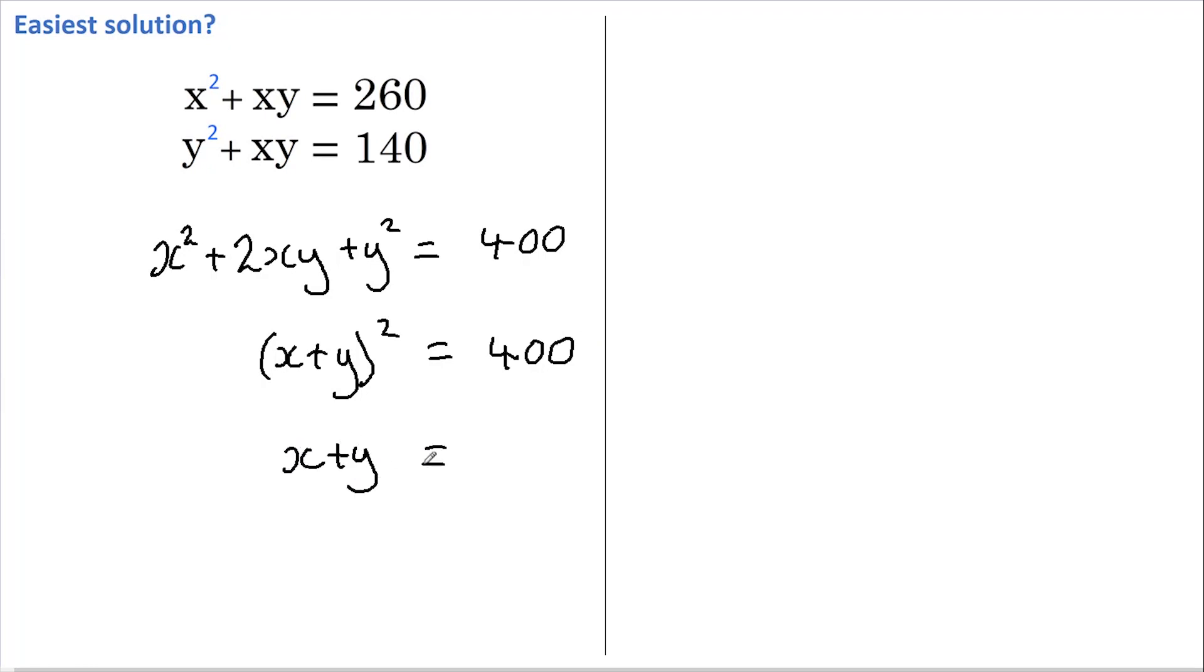Now formula number one can be factorized and rewritten as x multiplied by (x + y) equals 260. We've already established that x + y is 20, so this is 20x equals 260. I'm ignoring the negative 20 alternative at the moment.